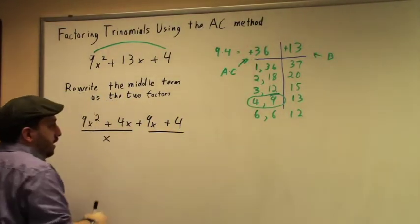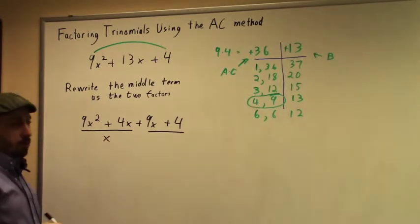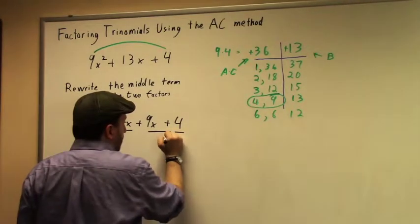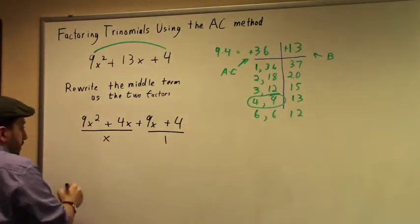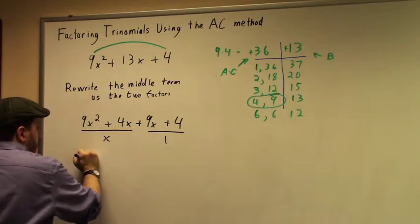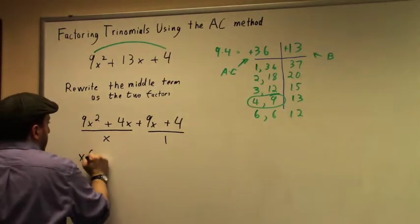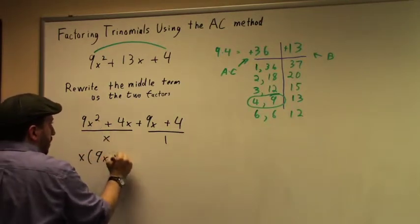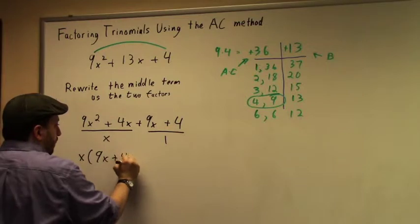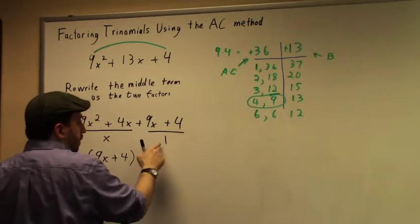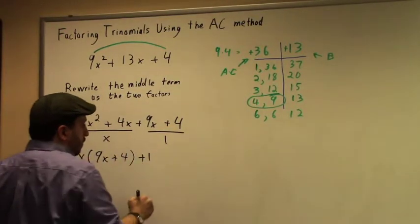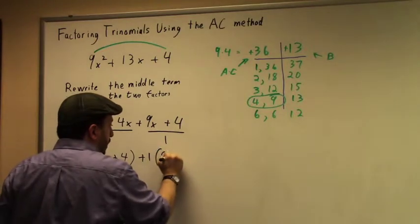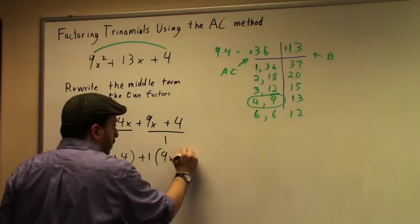Now on these two guys, I don't have anything in common here. So I'm going to write this. My GCF is going to be 1. Then I'm going to do my factoring. So I'm going to pull out an x from these two guys. 9x² divided by x is going to give me 9x. 4x divided by x is going to give me just 4. And then I'm going to pull out a 1 from these guys, which is going to give me 9x + 4 here.